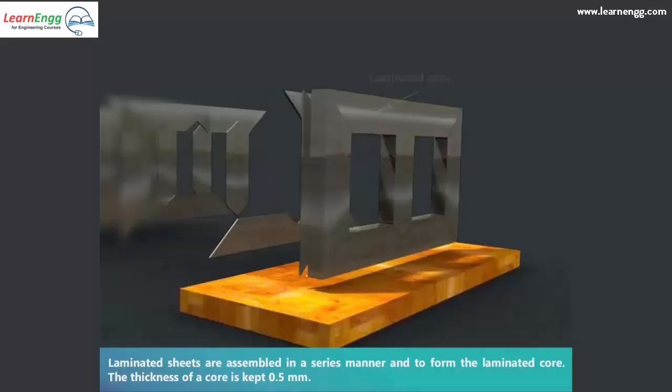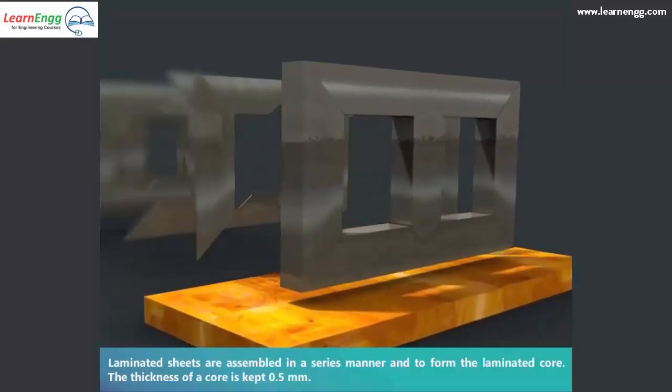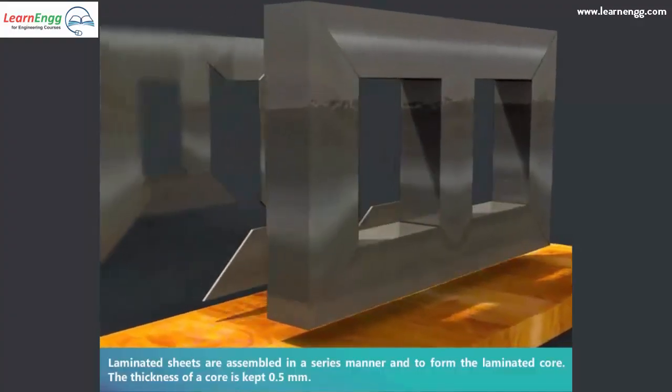Laminated sheets are assembled in a series manner to form the laminated core. The thickness of a core is kept 0.5 mm.